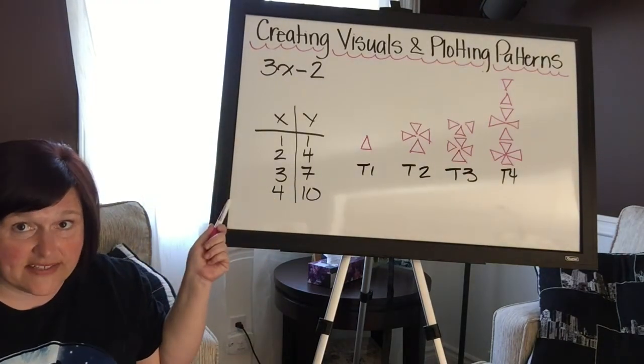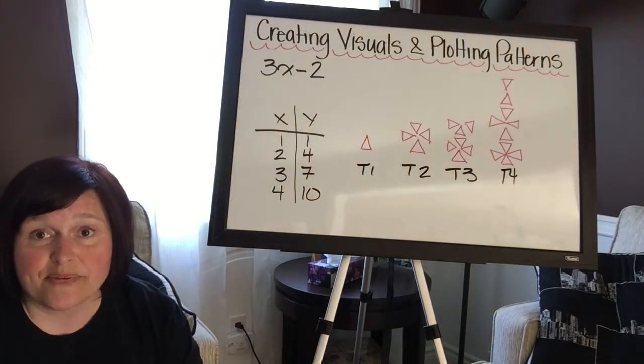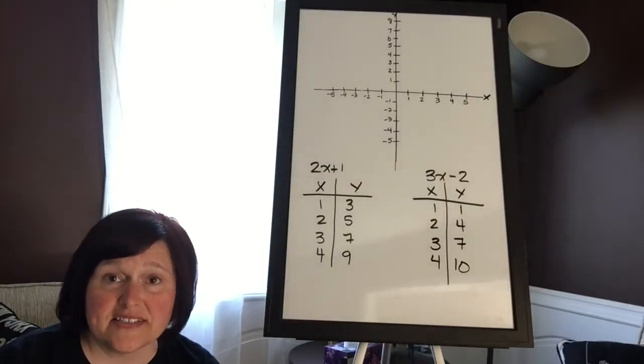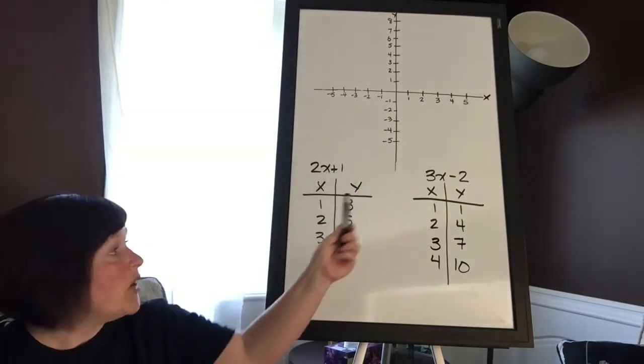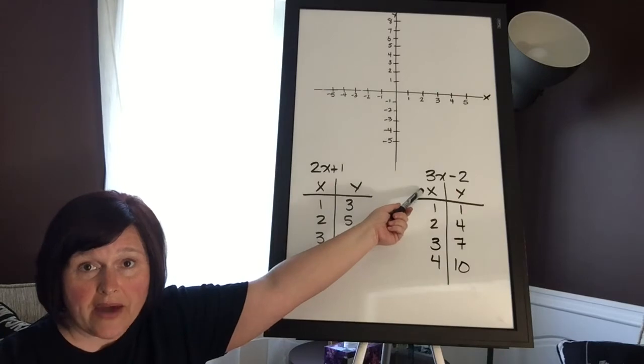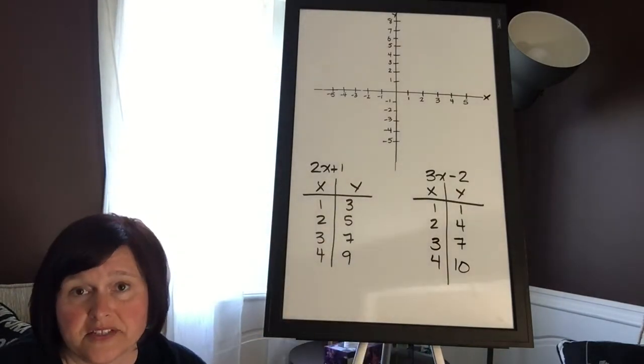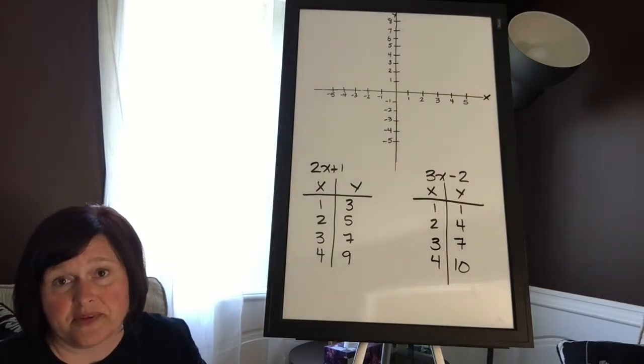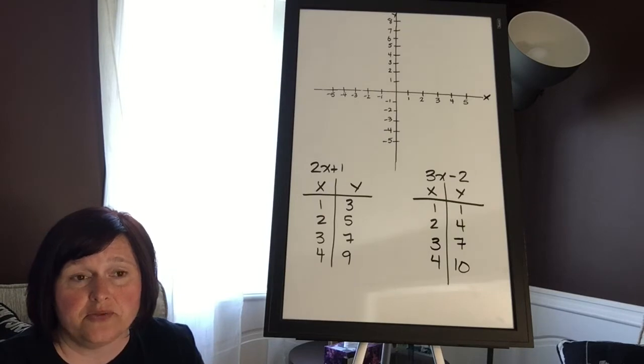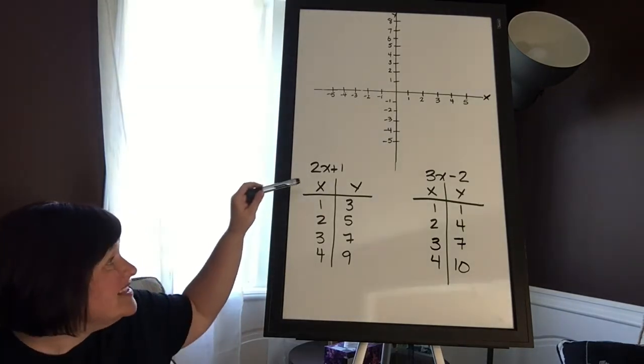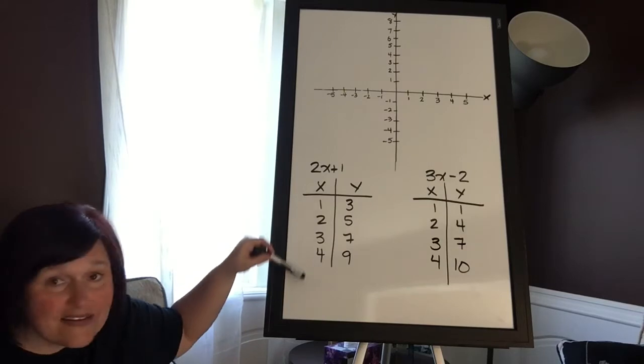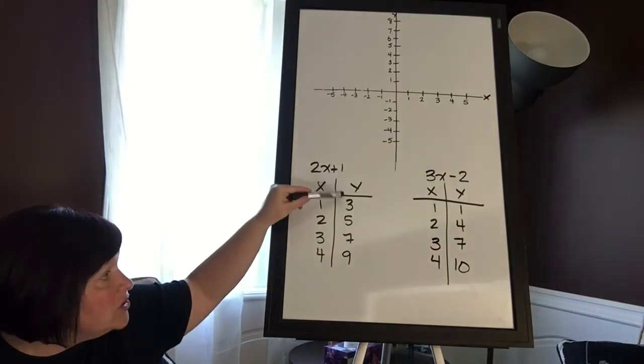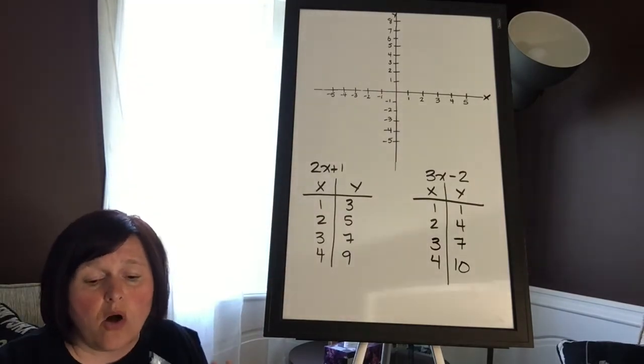All right, so now what happens when we graph these? I'll show you. Okay, so as you can see, I've created a graph and I've brought over our two algebraic explicit patterns, and I've brought over our table of values so I can show you how to plot them. Now the reason why we started off with term number and term value is because term number and term value relate to the x and y coordinates, which means that x are all the x coordinates and y is all the y coordinates. So the term number is x and the term value is y.